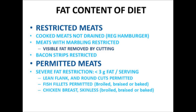In order to control fats in a practical way, it's important to restrict the selection of meats to certain types. For example, cooked meats not drained from regular hamburger is not a good idea — this needs to be restricted. Meats with marbling need to be restricted if you want to contain the fat content. Visible fat on the outside of the meat needs to be cut, and things like bacon strips need to be really restricted because they are a primary source of saturated fat.